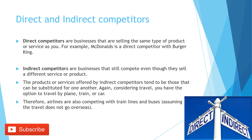Direct competitors are businesses selling the same type of product or service as you. For example, McDonald's is a direct competitor with Burger King, and Pizza Hut is a direct competitor to Domino's because they are both selling pizzas. Indirect competitors are businesses that compete even though they sell a different service or product — the products or services offered tend to be substitutable for one another. For example, consider travel — you have the option to travel by plane, train, or car, so airlines are also competing with train lines and buses, assuming the travel does not go overseas.